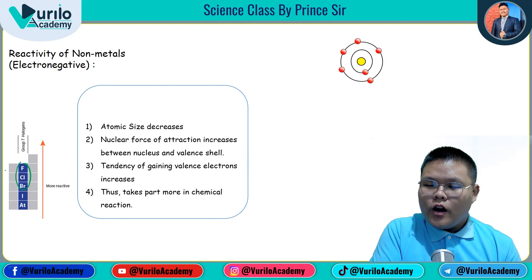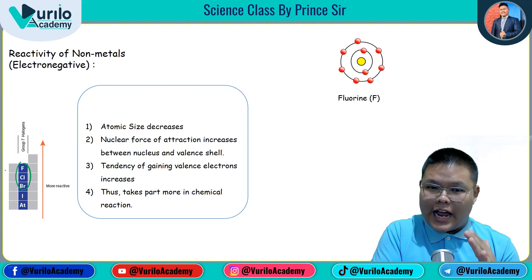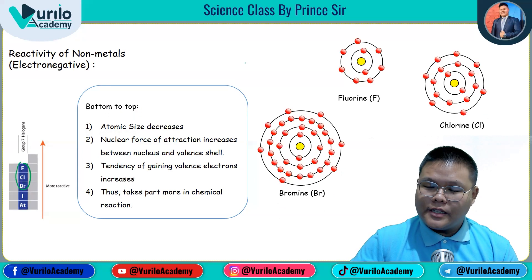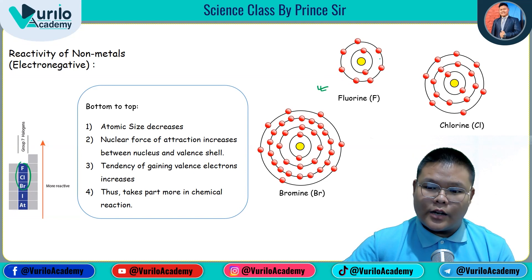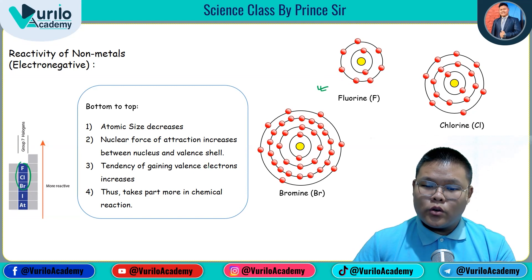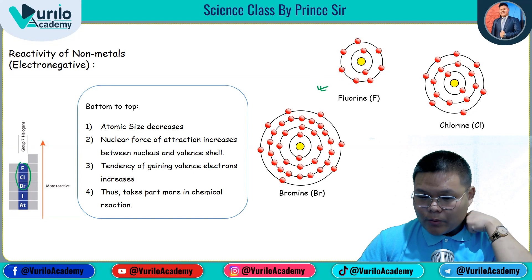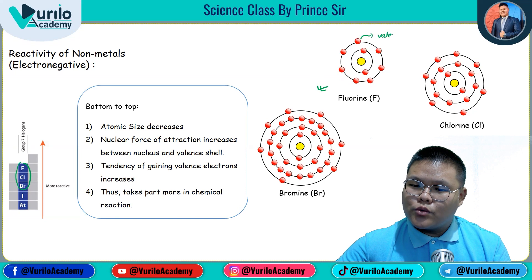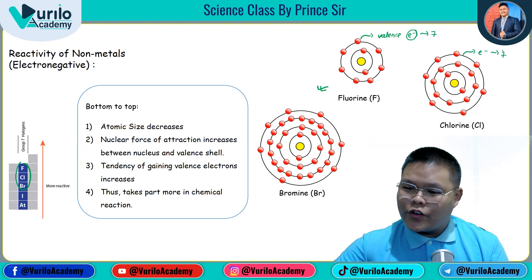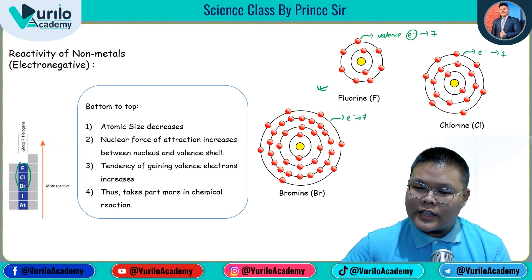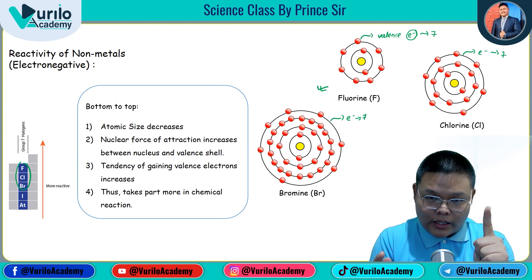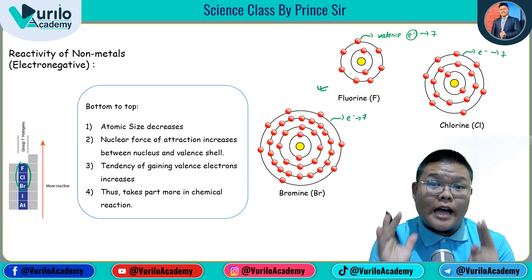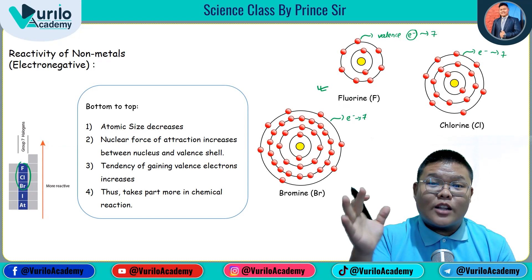Let's draw the atomic structure of fluorine. You can see the atomic structure here. The atomic size reference is important. Now for chlorine, the atomic size increases a little. For bromine, it increases even more. One thing you can observe: in the outermost valence shell, the valence electrons present are always 7. Even for bromine, the valence electron count is 7. Remember this in the context of non-metals — the valence electron is 7.